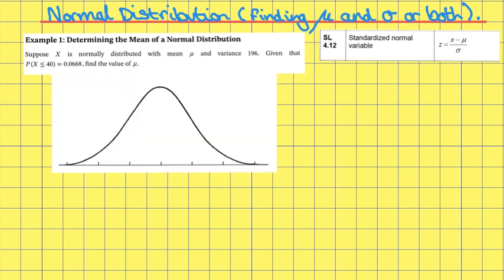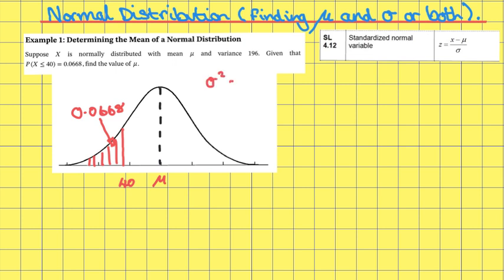Firstly, let's draw a diagram illustrating the information that we've been given. If we draw a bell curve and put in the relevant information, we know that the mean is equal to mu, and that anything less than or equal to 40 has a probability of 0.0668. We know that the variance is equal to 196, which means the standard deviation is equal to the square root of 196, so the standard deviation is equal to 14.